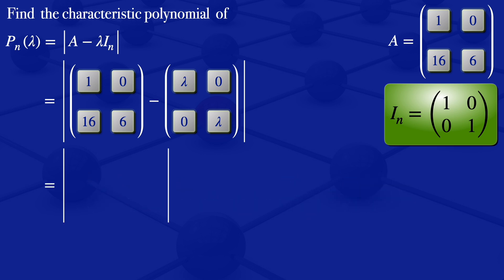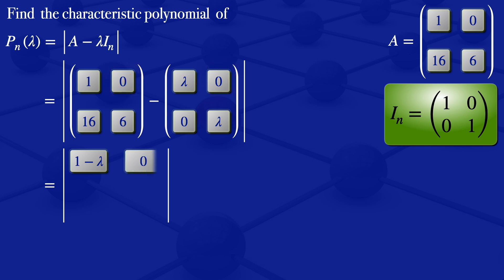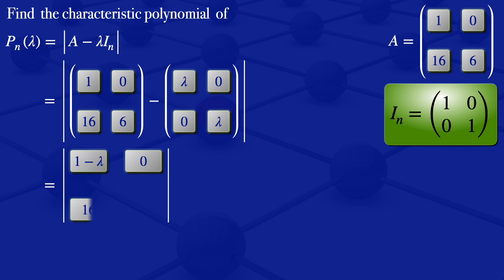For the element in the first row, first column, we get 1 minus lambda. For the first row, second column, 0 minus 0 gives us 0. For the element in the second row, first column, that's 16 minus 0, which gives us 16. For the element in the second row, second column, we get 6 minus lambda.